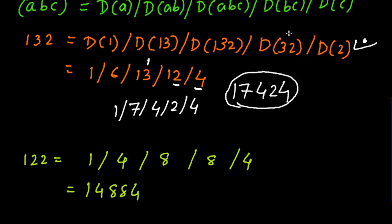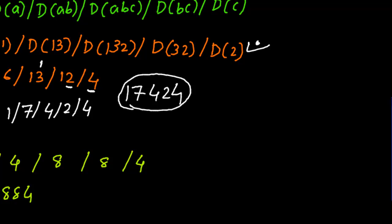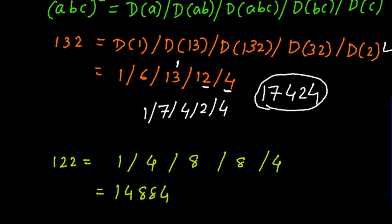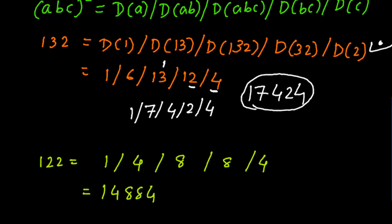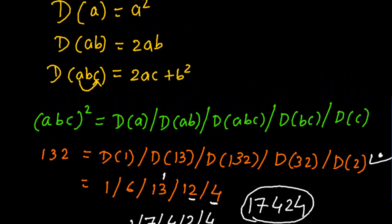This is how you can determine the square of any 3-digit number in a matter of seconds. What you need to remember is just one simple form, three duplex definitions, and you are ready to find the square of any 3-digit number instantly. I hope you find this video useful. Please pardon any mistakes I made while writing. I will take care going forward, and I would like your feedback in the comment section. Thank you.